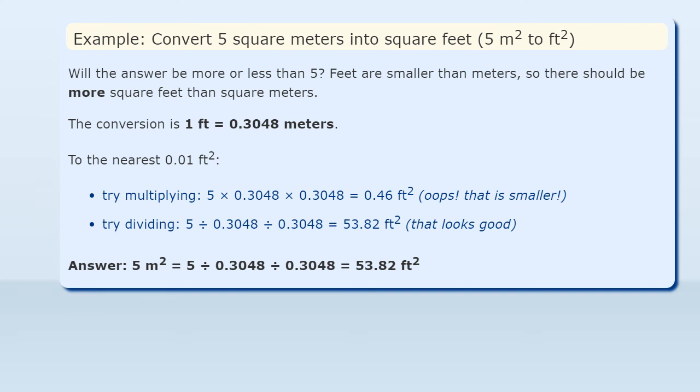Try dividing. 5 divided by 0.3048 divided by 0.3048 equals 53.82 square feet. That looks good. So the answer is 53.82 square feet.